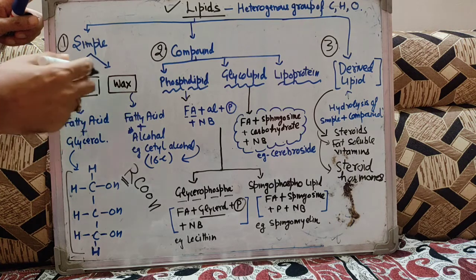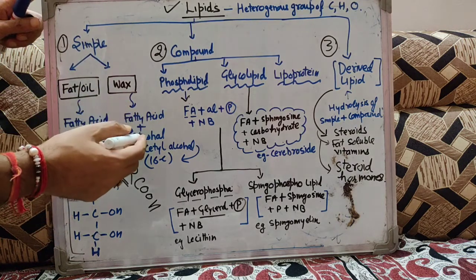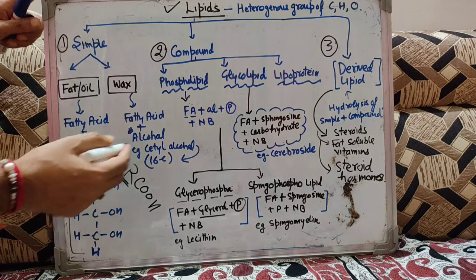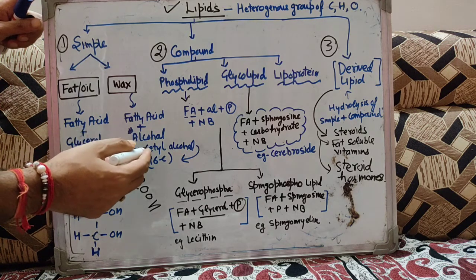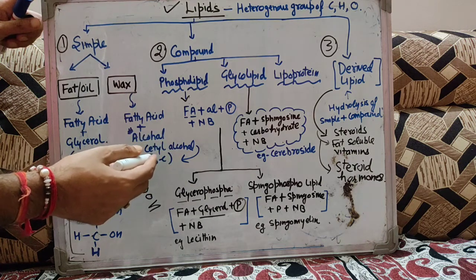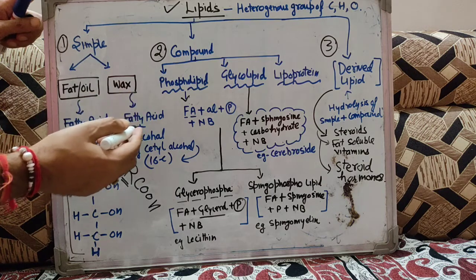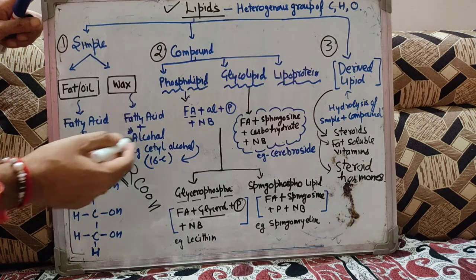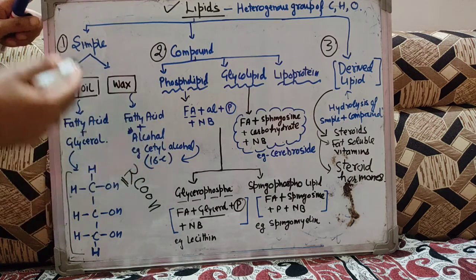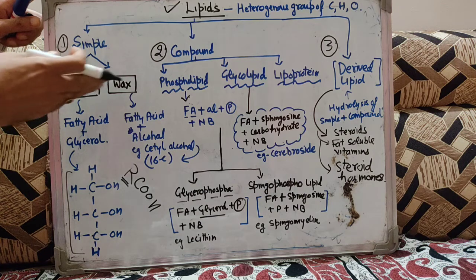Second type हम देखते हैं simple lipids में — wax. Wax किससे बना होता है? यह fatty acid plus alcohol से बना होता है, इसमें alcohol जो होगा that will be other than glycerol. जैसे example लेते हैं — इसमें alcohol होता है cetyl alcohol, 16 carbon जिसके अंदर होते हैं. So wax will have fatty acid and alcohol other than glycerol — example cetyl alcohol का. तो simple lipids are of two types: fats and wax.